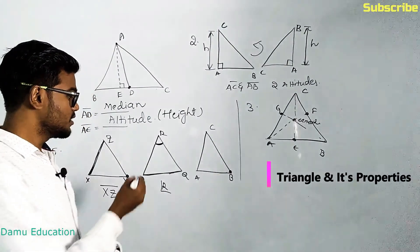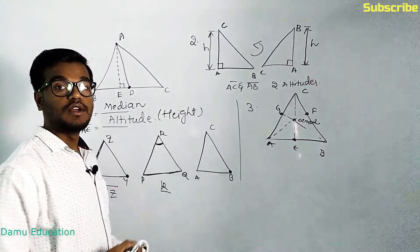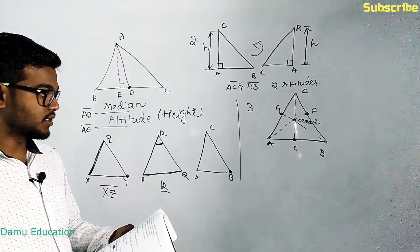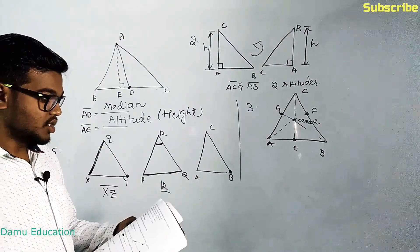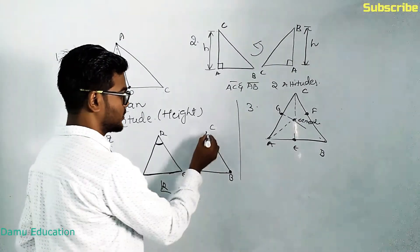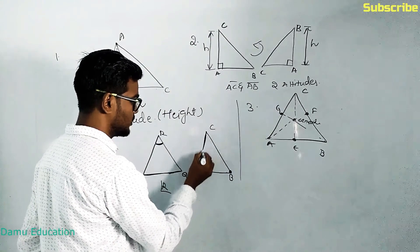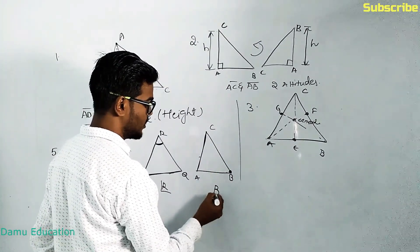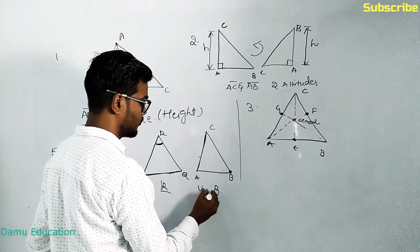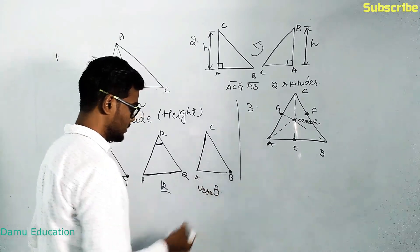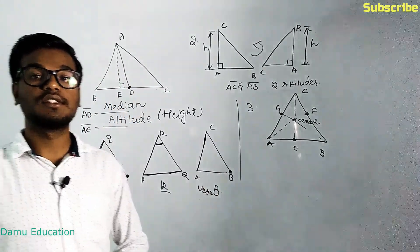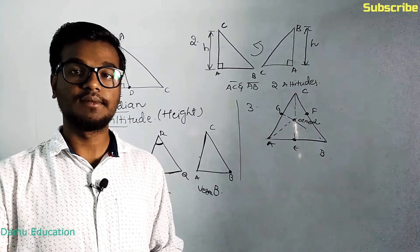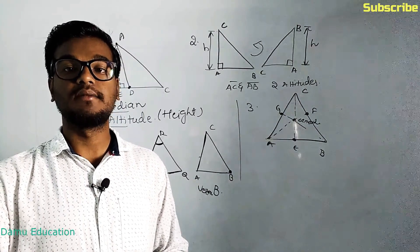Next, write the vertex opposite to side AC in triangle ABC. The opposite vertex is B. Thanks for watching this video. If you want more videos please subscribe and click the bell icon.